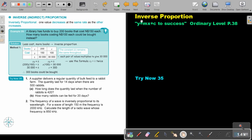In this video, we are going to focus on inverse proportion. You will find this on page 38 in the Namibia Ordinary Level Mathematics Textbook, Y equals Mx plus C to success. Inverse or indirect proportion. Inversely proportional, one value decreases at the same rate as the other increases.